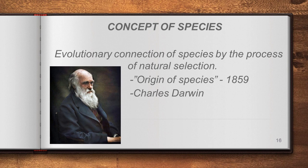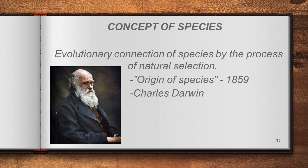The next definition is by Charles Darwin, who published the book Origin of Species in 1859. As the father of evolution, he connected species with evolution, describing an evolutionary connection of species by the process of natural selection. He used the evolutionary tree to show from which species a particular organism evolved.